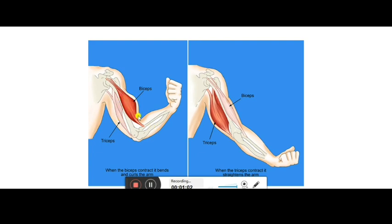Muscular tissues are contractile tissues, meaning they have the ability to contract and then relax. The flesh of our body is formed from muscular tissues. They are fibrous and known as muscle fibers — long cells containing highly contractile myofibrils, which are contractile proteins. For muscle formation we need lots of proteins. These muscle fibers are arranged either in sheets or in bundles.